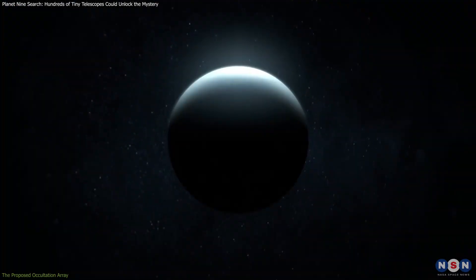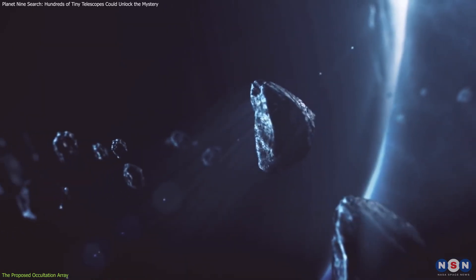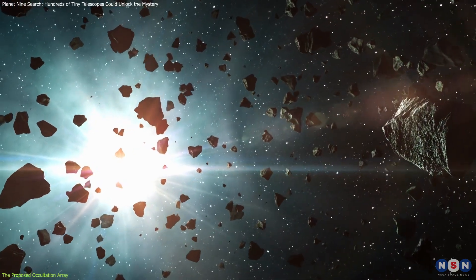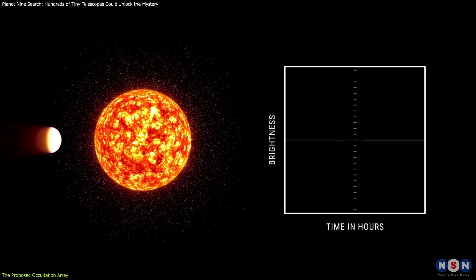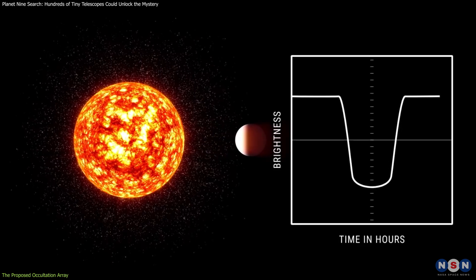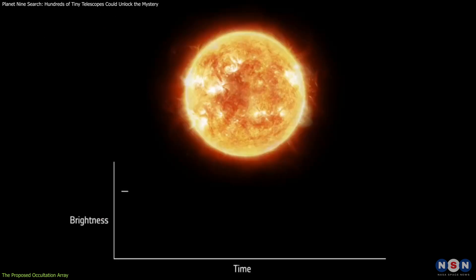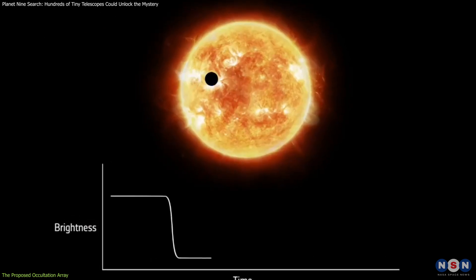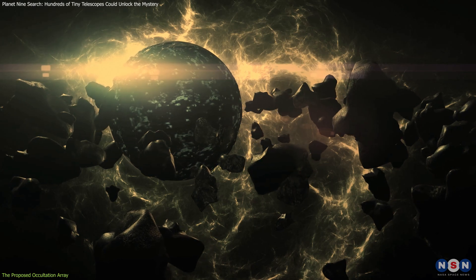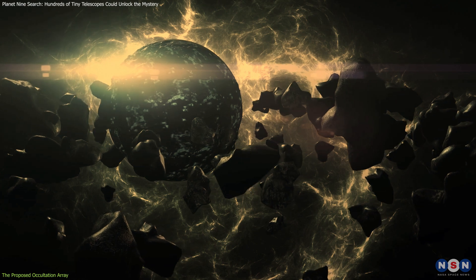To overcome the challenges of directly observing Planet 9, scientists have turned to an innovative approach: detecting its influence indirectly through stellar occultation. Occultation occurs when a distant object passes in front of a star, temporarily blocking or dimming its light. By monitoring these events, astronomers can extract critical information about the size, shape, and orbit of the intervening object.